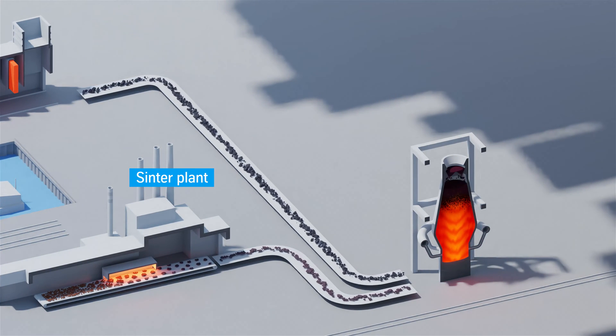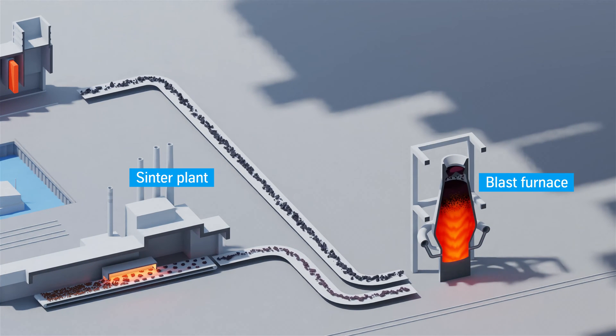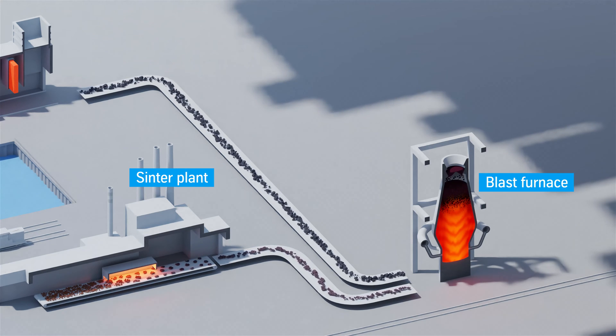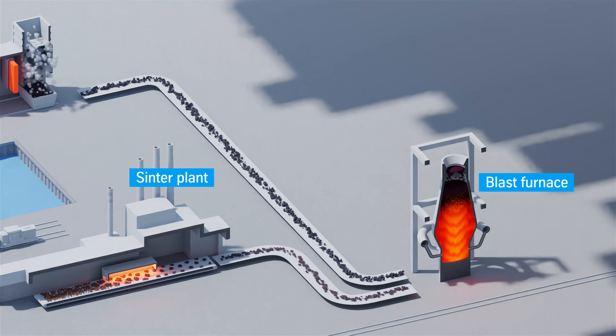The next step is the smelting process. Iron ore, coke and fluxes are continuously charged into the top of the blast furnace, up to 25,000 metric tons of material per day.